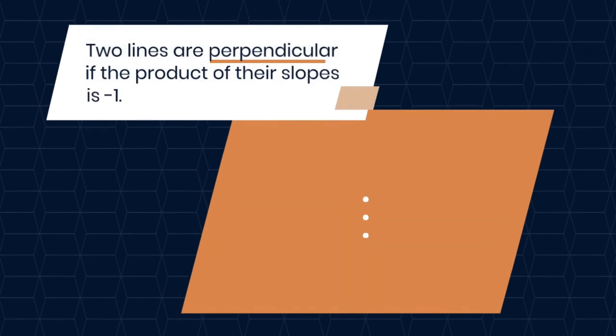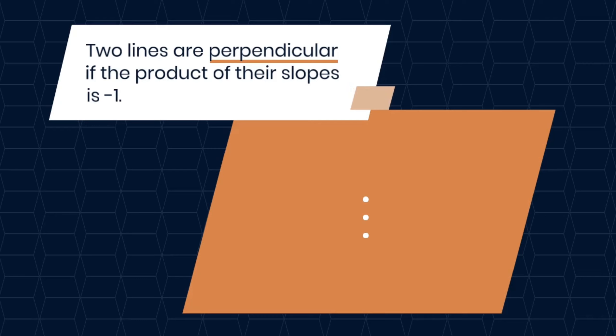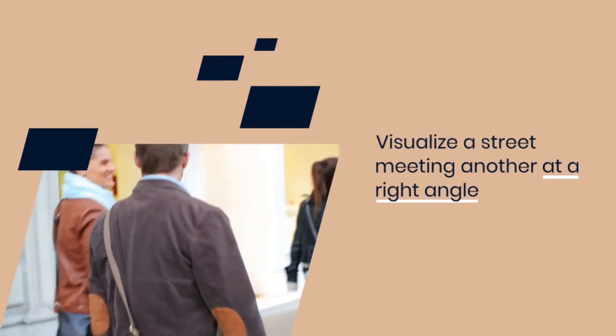Perpendicular Lines — Formula: Two lines are perpendicular if the product of their slopes is -1: M1 · M2 = -1.